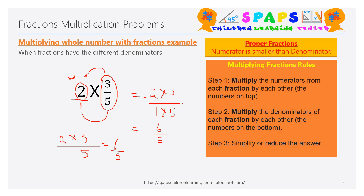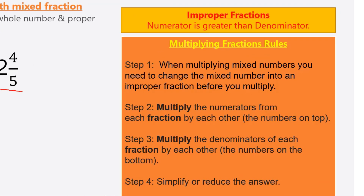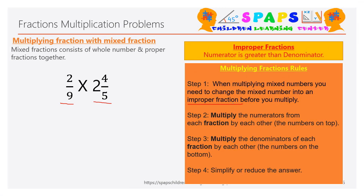Let's move on to the next type: one mixed number multiplied by one fraction. This is the fraction and this is the mixed number. The rule is: when multiplying mixed numbers, you need to change the mixed number into an improper fraction before you multiply. The first step is to convert the mixed number into an improper fraction.